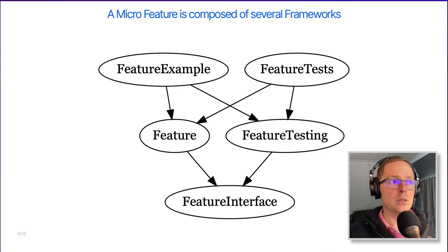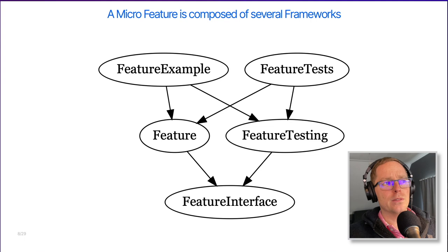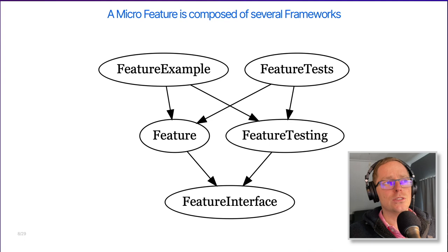The dependencies between those things would look pretty much like this. You have the feature interface that defines the contract for the outside world. You have the feature that implements that interface. You have feature testing that utilizes the feature interface to run the feature itself — that's more on a unit level. And then the feature tests could be like UI tests or more involved tests that do a deep inspection, sort of like white-box testing of your feature. On top of that, there's a feature example that showcases how you can use this feature in production.